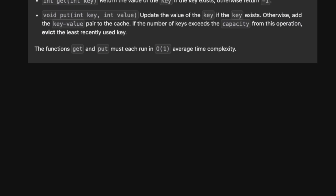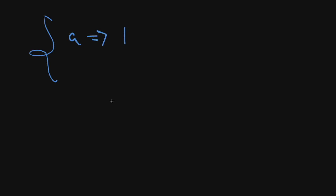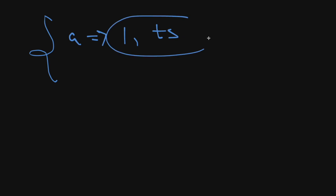Now that we know the constraints, let's think about how to solve this. The problem with a plain dictionary is that we don't actually know the update time — we can't tell which key was most recently added. We could store a timestamp when a key is added, but then to pop something we'd have to parse all the values, giving us O(n) complexity, which doesn't work because we need O(1).